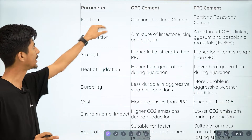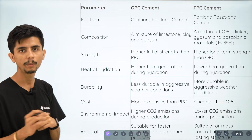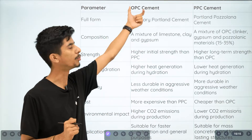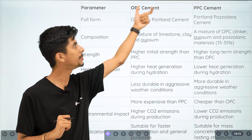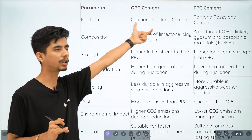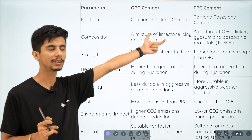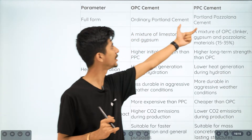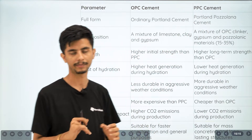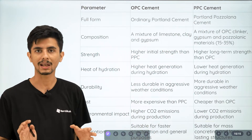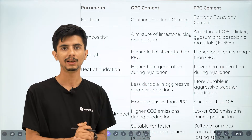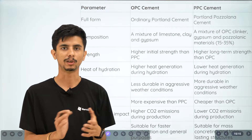What is OPC? It is a type of Portland cement. In full form, it is Ordinary Portland Cement. And what is PPC? It is Portland Pozzolana Cement. Pozzolana is a volcanic ash — it is a clay-rich mineral.